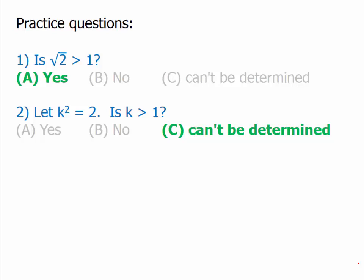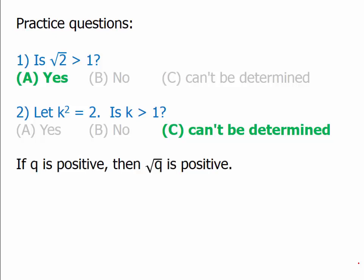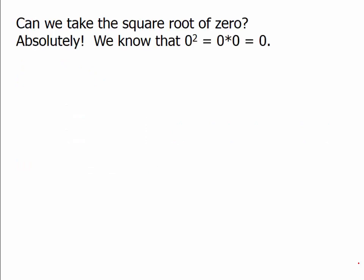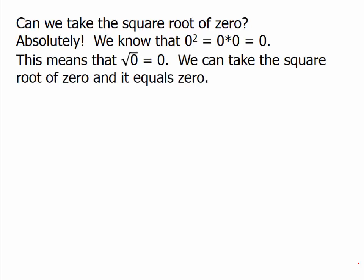When we're taking the square root of a positive number, the output is always positive. So if q is positive, then the square root of q is positive. This brings up the question: can we take the square root of zero? The answer is of course we can. We know that zero squared is zero, and so the square root of zero is zero. We can take the square root of zero and it equals zero — perfectly fine, no ambiguity.